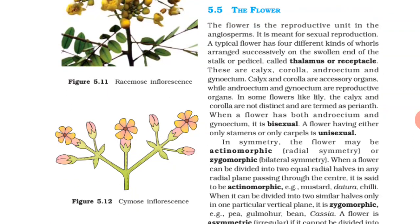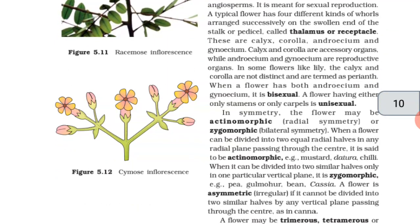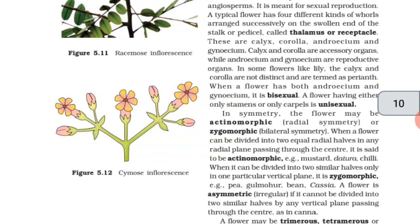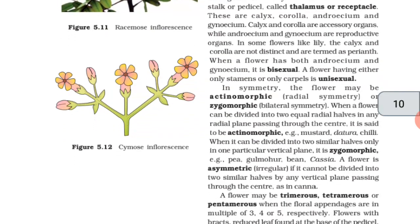In symmetry, the flowers may be actinomorphic, radial symmetry, or zygomorphic, bilateral symmetry. When a flower can be divided into two equal radial halves in any radial plane passing through the center, it is said to be actinomorphic, e.g. mustard, datura, chili. When it can be divided into two similar halves only in one particular vertical plane, it is zygomorphic, as in pea, gulmohar, bean, cassia. A flower is asymmetric or irregular if it cannot be divided into two similar halves by any vertical plane passing through the center, as in canna.